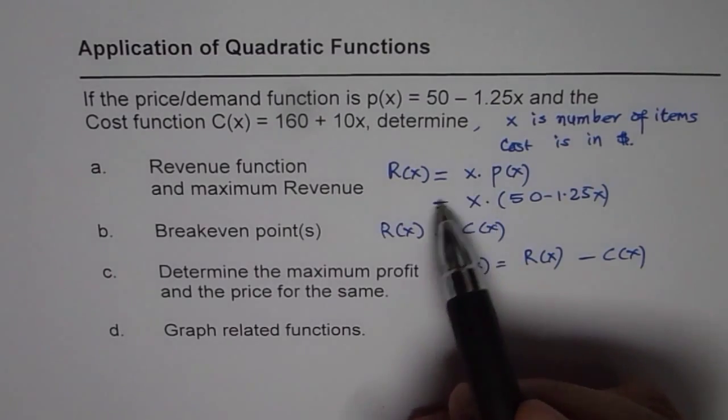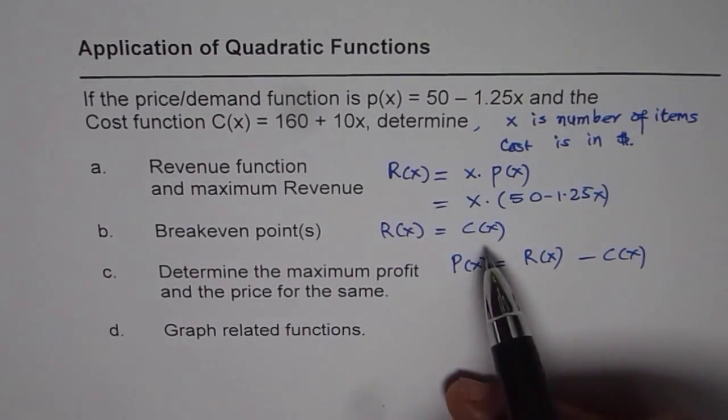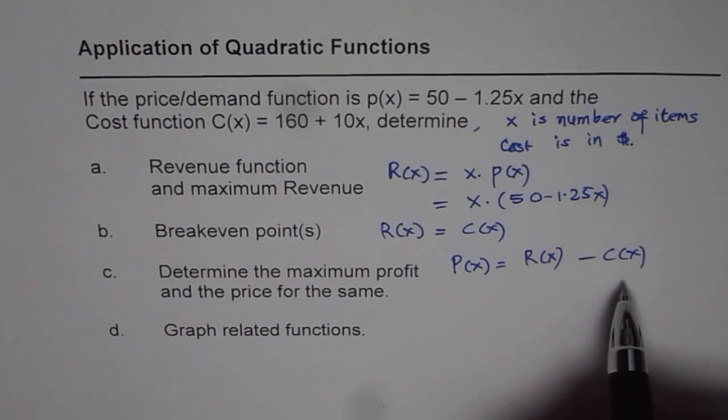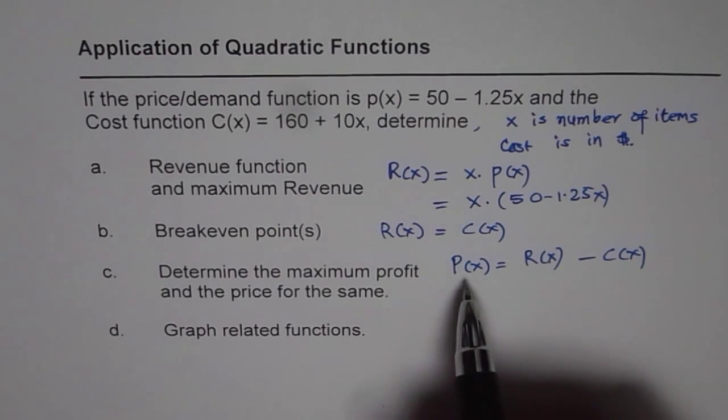So from these you know the revenue function and the cost function is given to you. Their difference, simplify it, you will get a polynomial in the form of a quadratic function which will represent the profit.